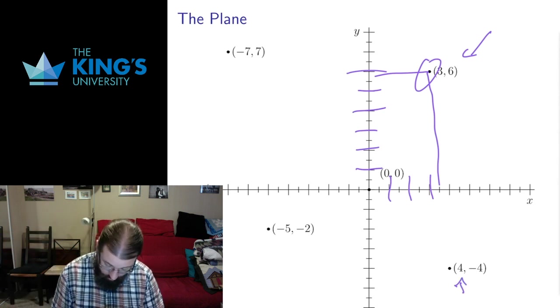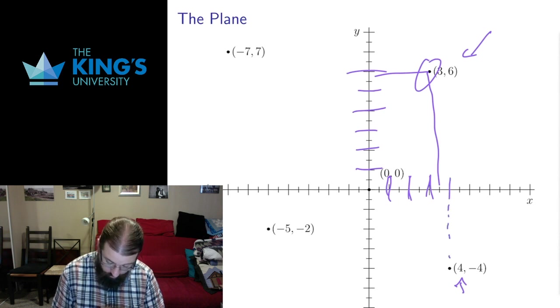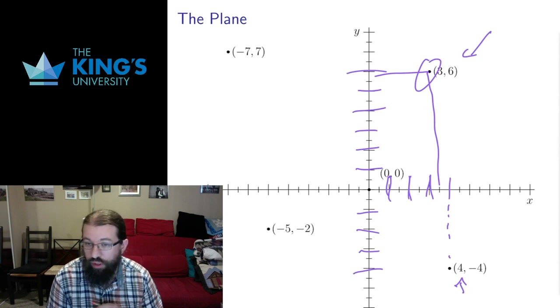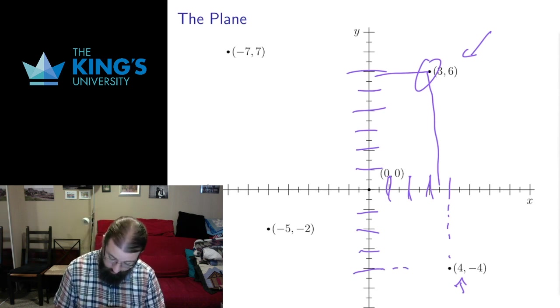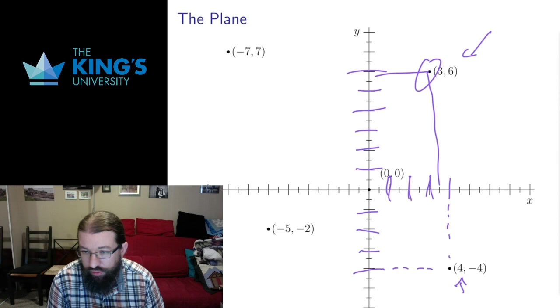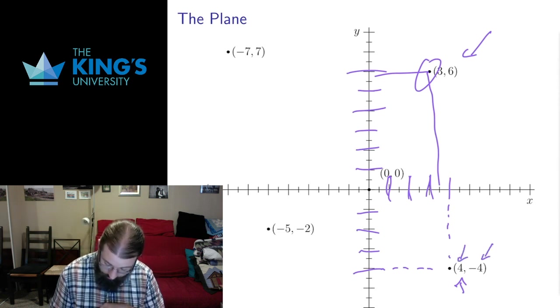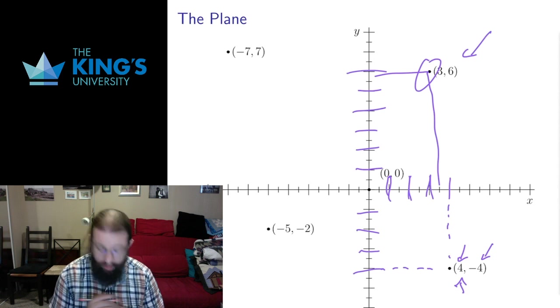If I look at this point down here, if I go over 1, 2, 3, 4, go down 1, 2, 3, 4, because the y-coordinate is negative, negative means downwards, I get the point that sits at 4 units to the positive in the x-axis, 4 units to the negative in the y-axis.